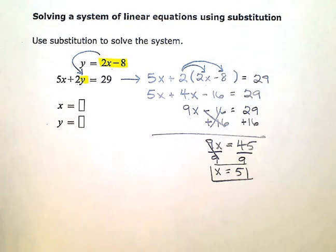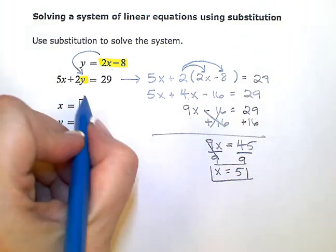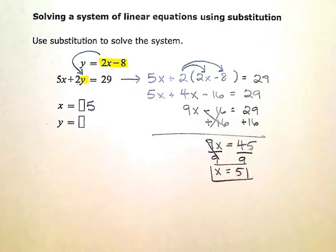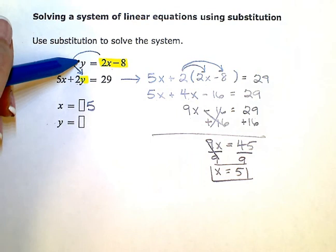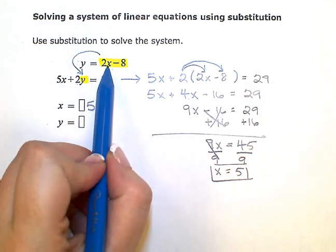So I know my x value now, x is equal to 5. Now I just need to figure out my y value. Well, that's easy, because up here it says y is equal to 2x minus 8, and I already know what x is. I just figured that out.